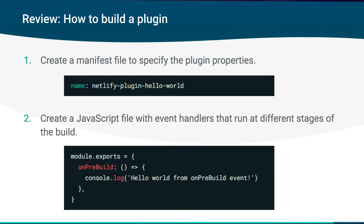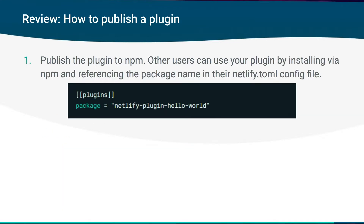But you can also take these files, package them up, and share them with others. To do this, you first start by publishing the plugin to npm. This way, other users can use your plugin as well, by installing it using npm install, and then referencing the package name for the plugin inside of their Netlify.toml config file. Once they've done that, they can run it locally or inside of Netlify's build.